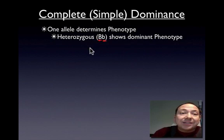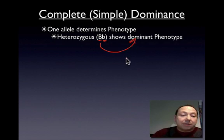Remember that the heterozygous has one dominant allele and one recessive allele. So with simple dominance or simple Mendelian dominance, anybody who's heterozygous is automatically going to show the dominant phenotype.